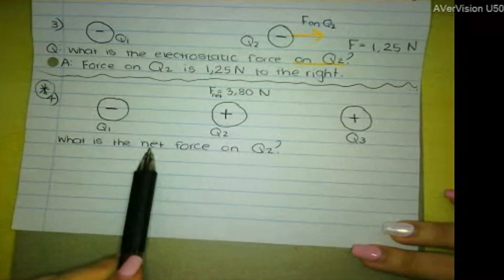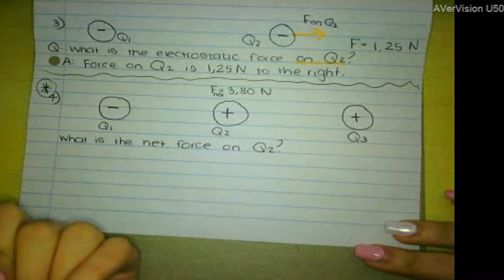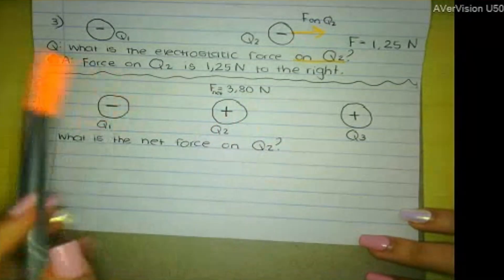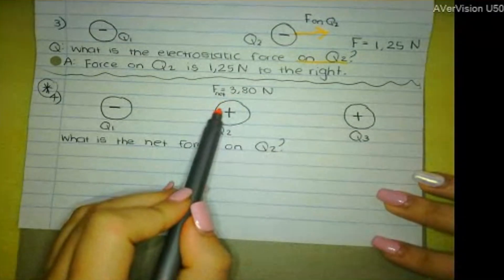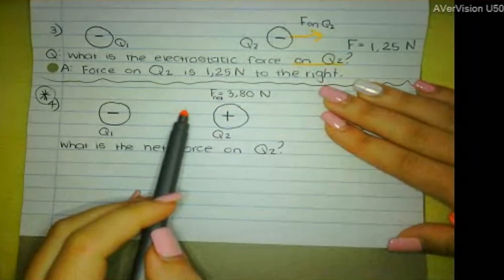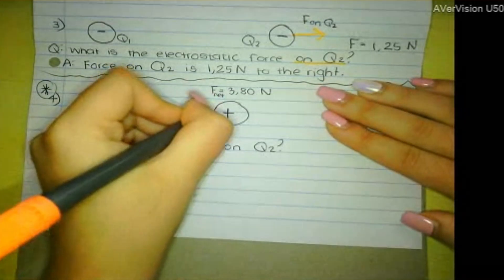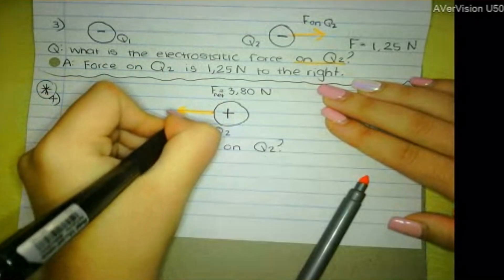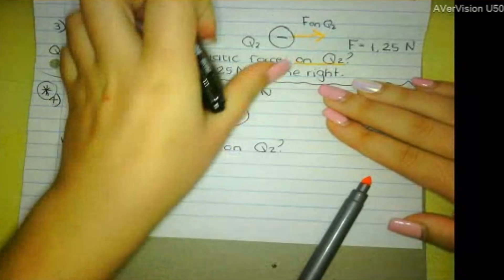Question 4: what is the net force on Q2? The net force on Q2 is given as 3.80 N, but I want to show the direction. Looking at Q2: because of Q1, Q2 is negative and Q1 is positive — unlike charges attract — so Q2 will be attracted to Q1, meaning the force of Q1 on Q2 points to the left.